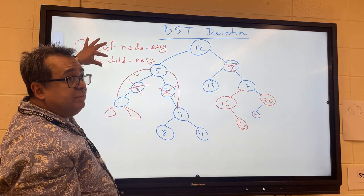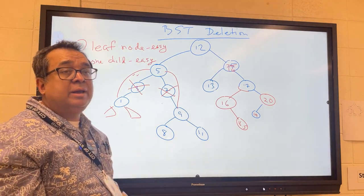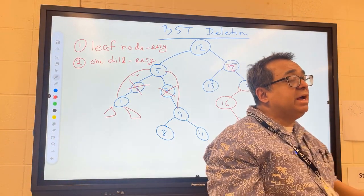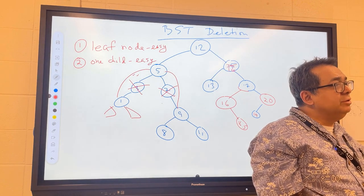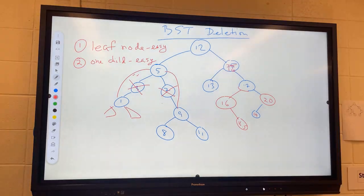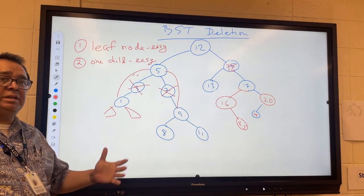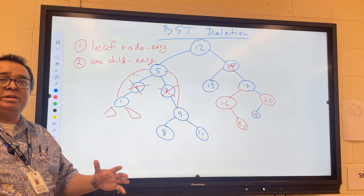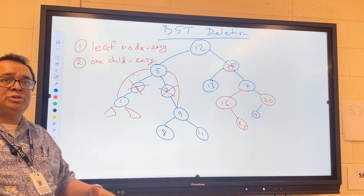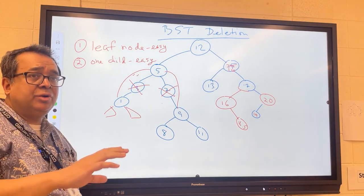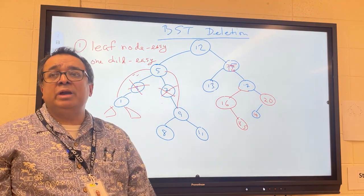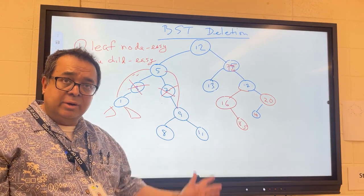Now instead of going with the minimum of the right subtree, what other node could I have used? I think everyone was shouting it - it was the maximum of the left. So that's another possibility. Because we want a deterministic answer here and want to make sure that your code works through the auto grader, let's all just agree we're going to use the minimum of the right subtree.